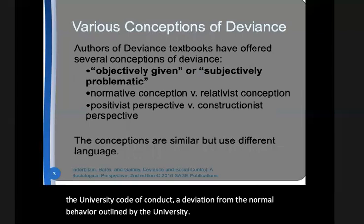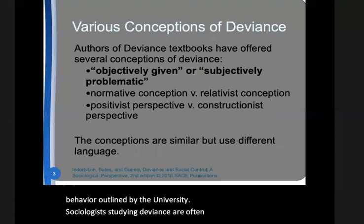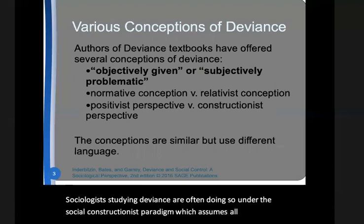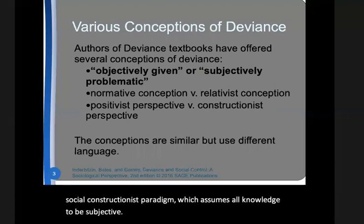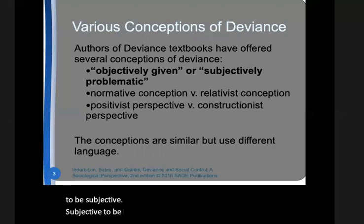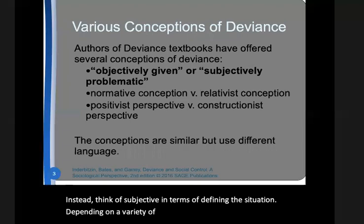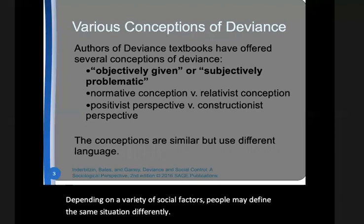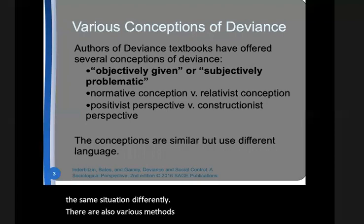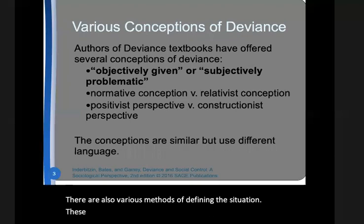Sociologists studying deviance are often doing so under the social constructionist paradigm, which assumes all knowledge to be subjective. Subjective is not to be mistaken as meaning not real. Instead, think of subjective in terms of defining the situation. Depending on a variety of social factors, people may define the same situation differently. There are also various methods of defining the situation. These methods can be categorized as formally defined and informally defined.